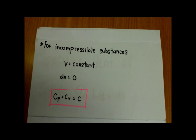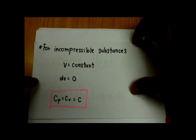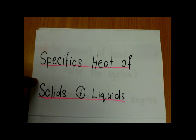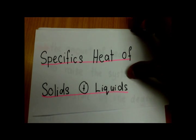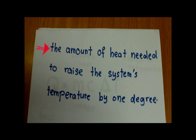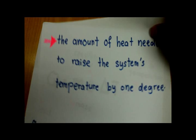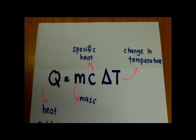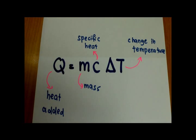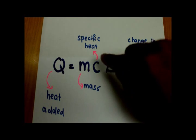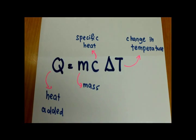After knowing that the constant pressure and constant volume specific heats are the same, we need to know the specific heat of solids and liquids. It is the amount of heat needed to raise the system's temperature by one degree. The well-known formula is q equal to m c delta T, where q is heat, m is mass, c is specific heat, and delta T is the temperature change.